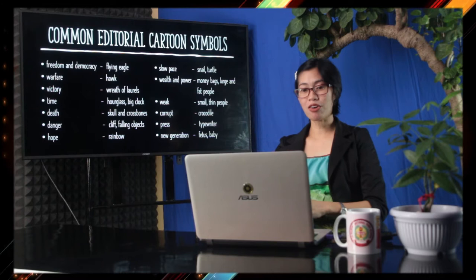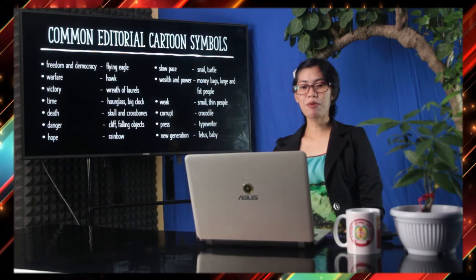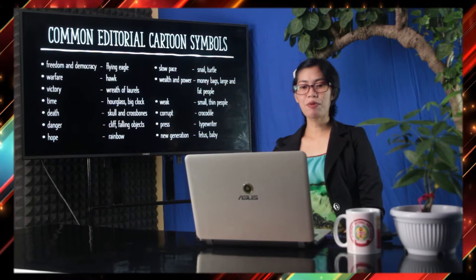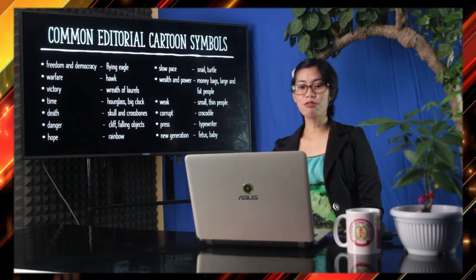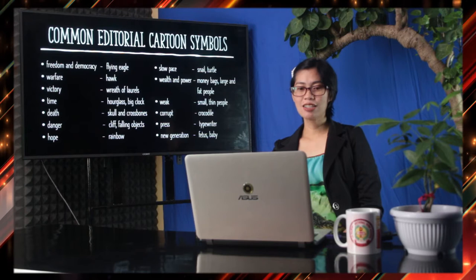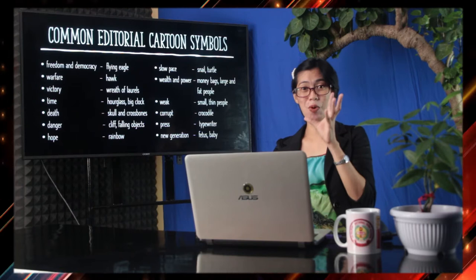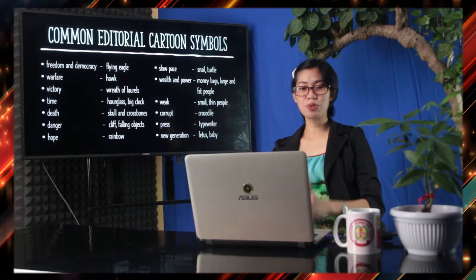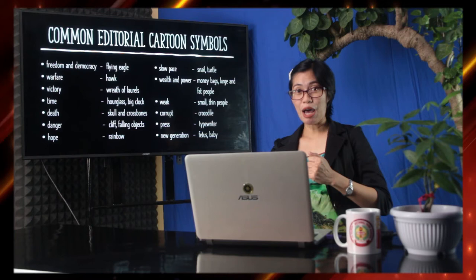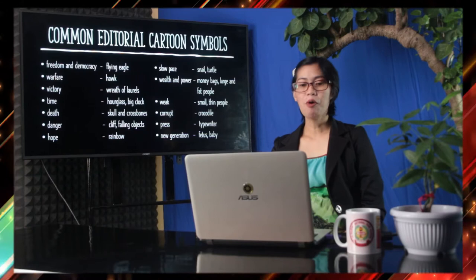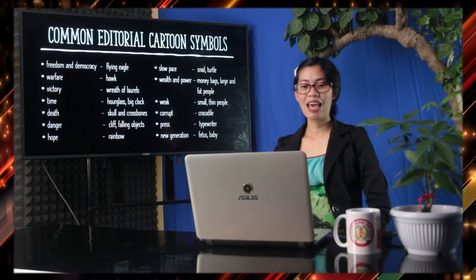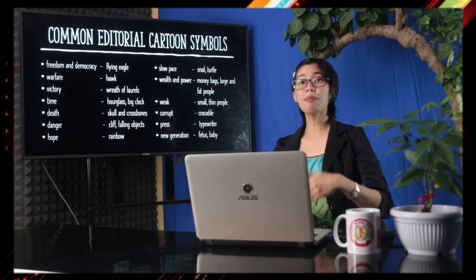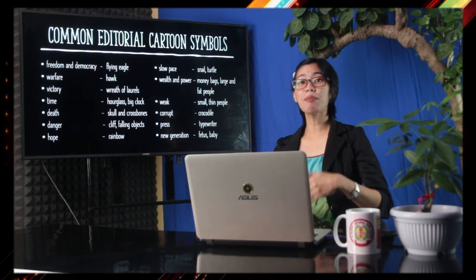Here is a list of common editorial cartoon symbols. Freedom and democracy may be represented by a flying eagle, warfare by a hawk, victory by a wreath of laurels, and time by an hourglass or a big clock. Death could be represented by a skull and crossbones — like what we see on acidic or dangerous chemicals — or by the grim reaper and his weapon. Danger may be represented by a cliff or falling objects, while hope may be represented by a rainbow, a universal symbol.